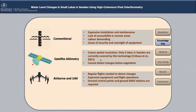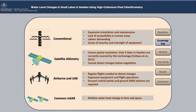Another method is satellite altimetry, which works only in large lakes. In Sweden, there are only five lakes large enough to be detected by satellite altimetry. How about drones? They are expensive and hard to implement — there is a lot of preparation involved, so they are not efficient for measuring water level change. To understand how difficult it is using conventional methods: imagine there are 100,000 lakes in Sweden, and there are only 40 lakes that have gauging stations.